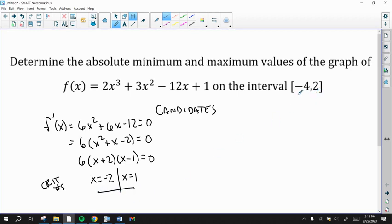Make sure that the critical numbers are within the endpoints, negative 4 and 2, because if they're not, then they're not candidates anymore. You don't have to worry about them. So here comes the candidate's test.